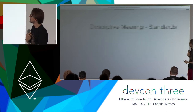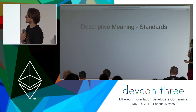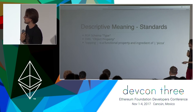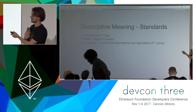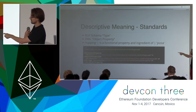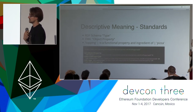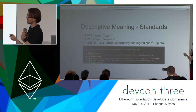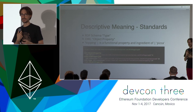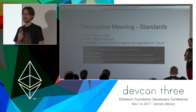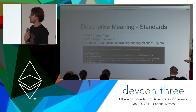Here's how descriptive meaning standards would be expressed in the pizza ontology. You want to talk about what a topping is — it's a functional property, an ingredient of pizza. This is how you would declare that for a machine. The machine could then interact with topping data in a way that is reasonable. Not that the machine understands what a topping is, but it would be able to interact with that data reasonably.